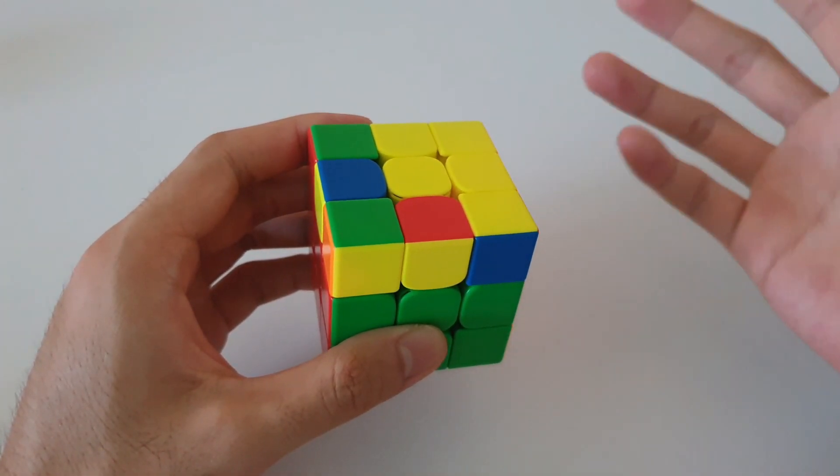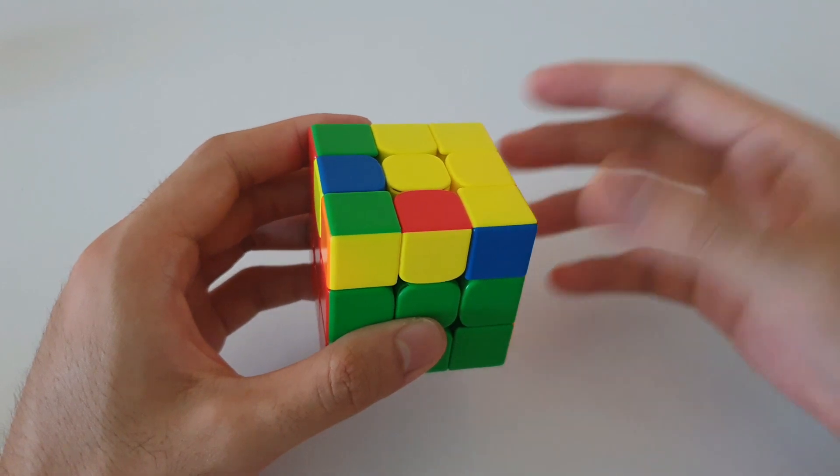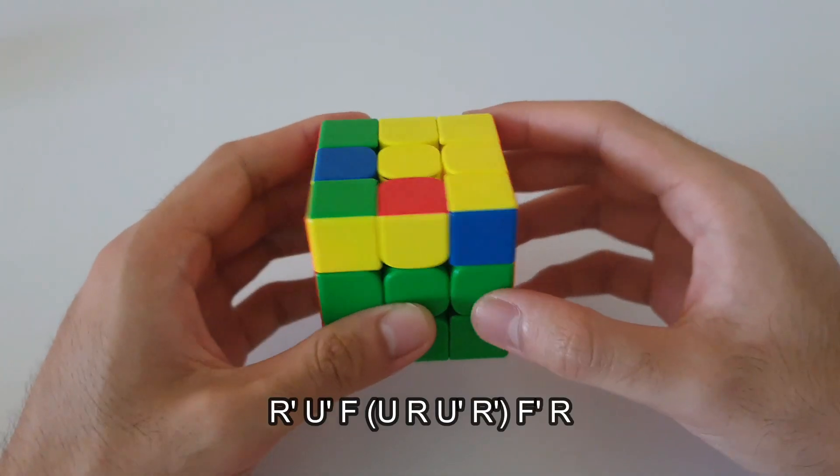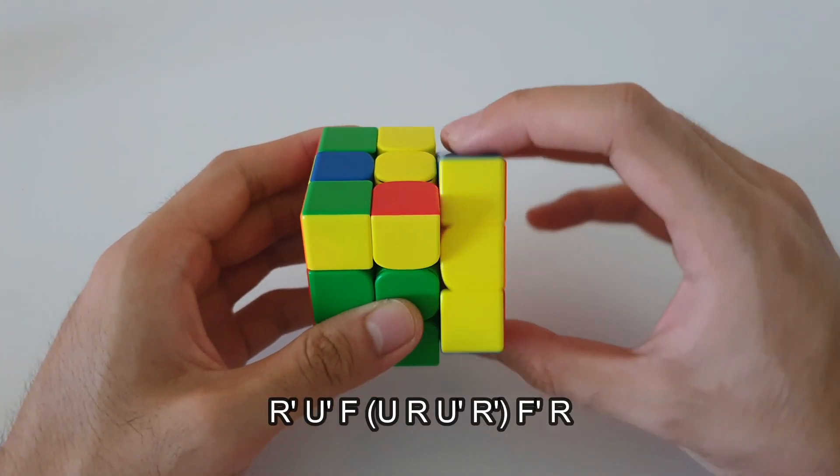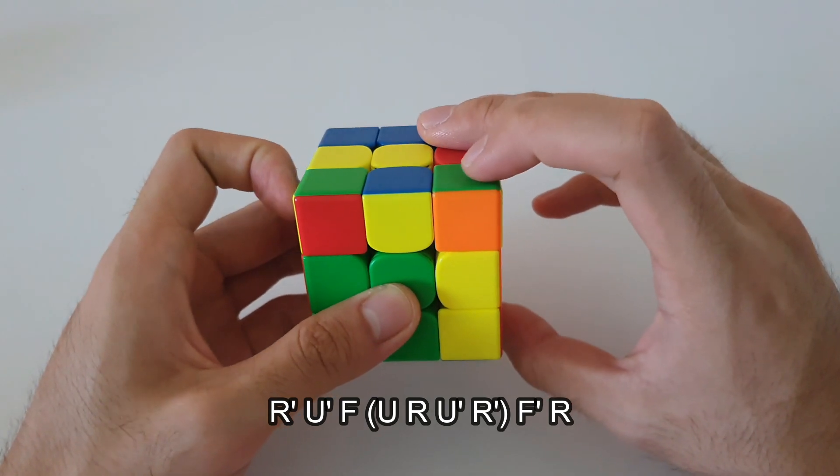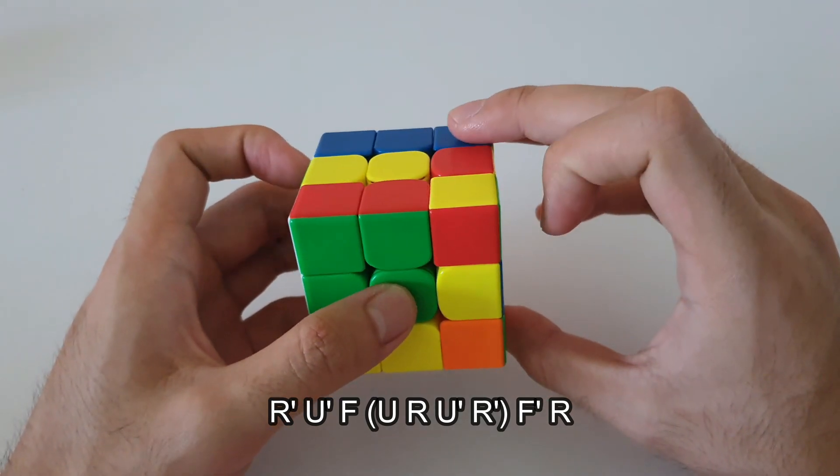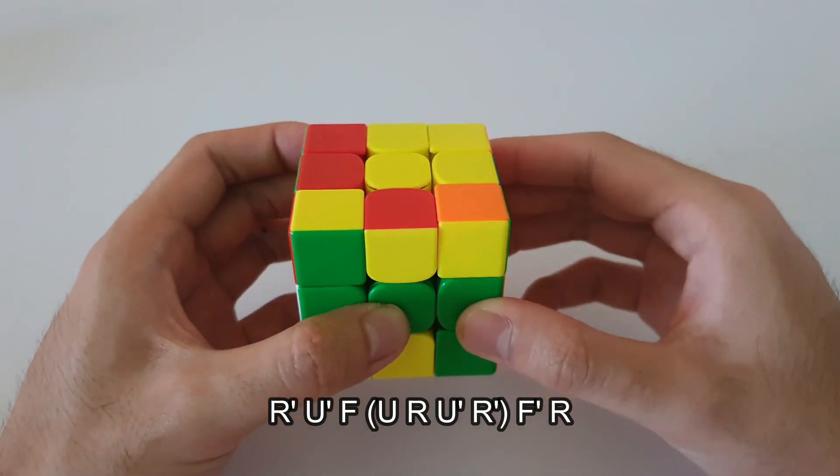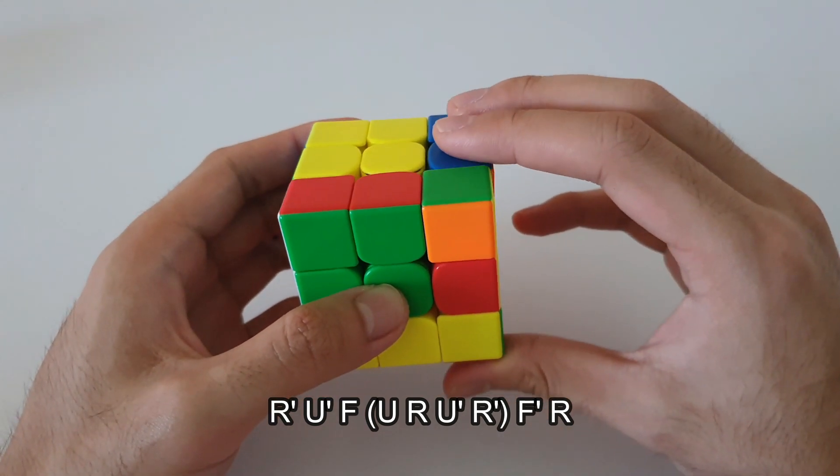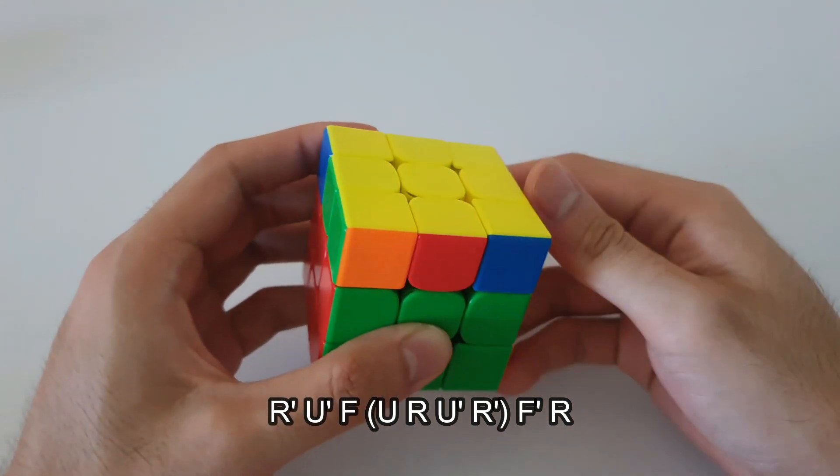So as I mentioned it is done with your right hand and the algorithm is shown as follows. So it starts off with an R' U' followed by an F, following that it is an inverse sexy. At the end here it's followed up by an F' and an R.